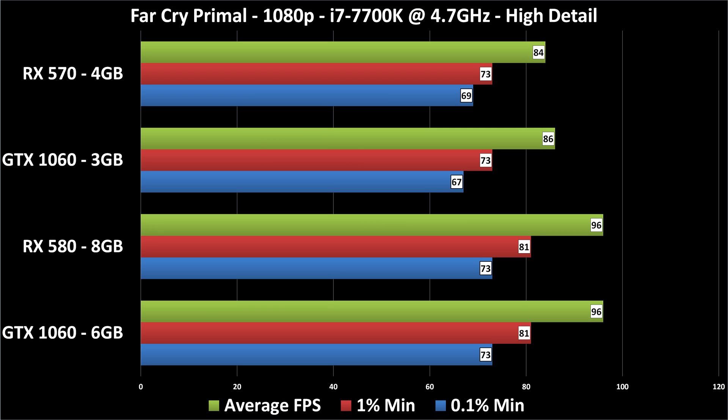Now onto Far Cry Primal — same story. The two less expensive cards are very similar in performance, and the two more expensive cards are very similar in performance. But again, this is an incredibly short built-in benchmark run, and I highly doubt it's reflective of all the gameplay in the game. All this means is that in this comparative test, the RX 570 and GTX 1060 3GB are very similar, and the RX 580 8GB and GTX 1060 6GB are also extremely similar in performance. There's probably very little real difference between the cards — buy the one that costs the least from the company you prefer.